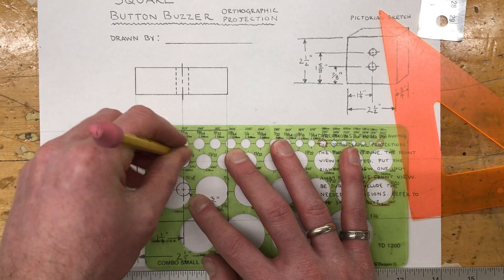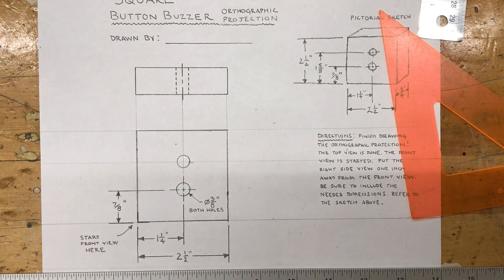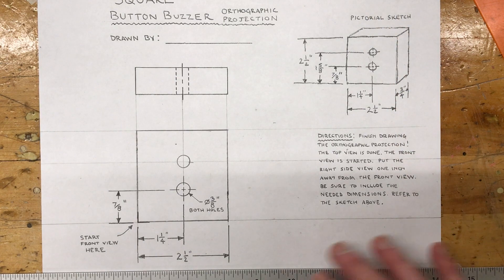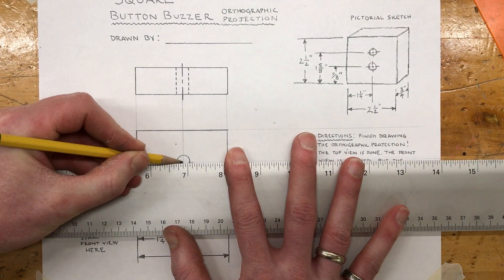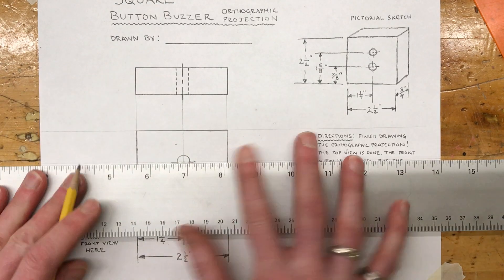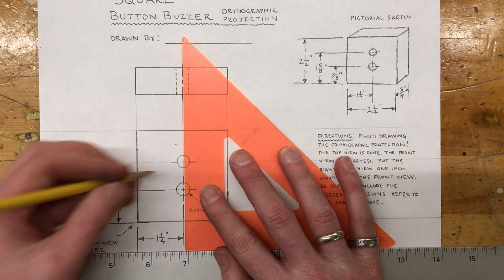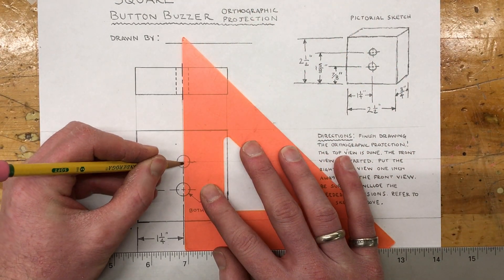I do want to draw the center lines. A center line is a long line, dash in the middle, long line. Do the same thing here - long line, dash in the middle, long line.